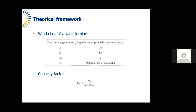In summary, class 1 wind turbines are designed to operate at high wind speeds, while class 3 wind turbines are designed to operate at low wind speeds. A dimensionless parameter used to note the performance of a wind turbine is the capacity factor, or CF. This can be defined as the ratio of the real power production EW to the rated power production of the wind turbine PR in a certain period of operation YH. This parameter indicates the fraction of time that the wind turbine operates at its rated power.